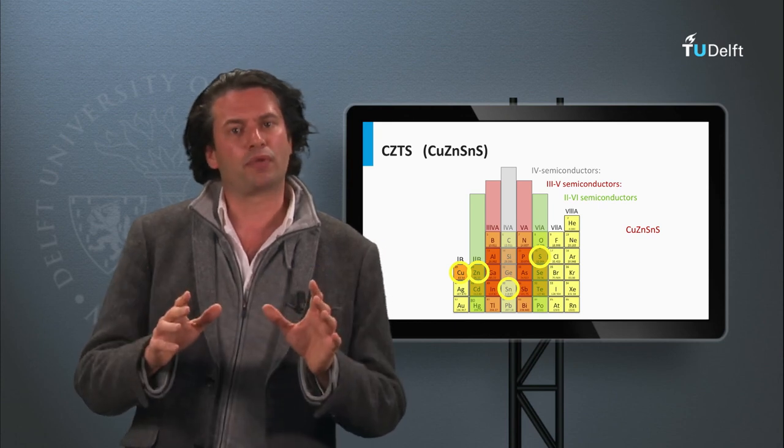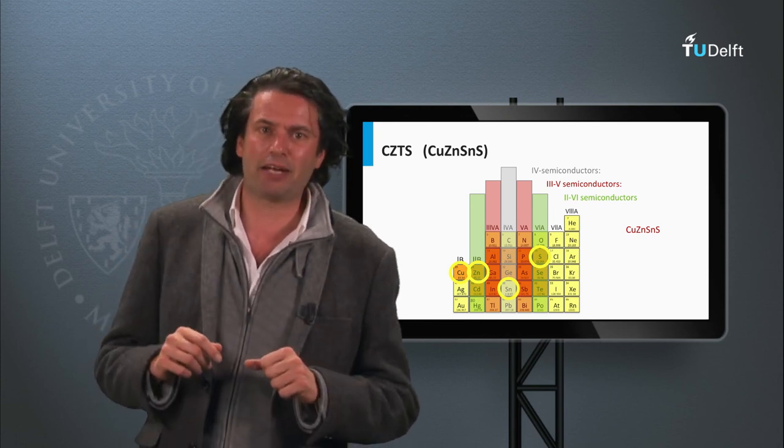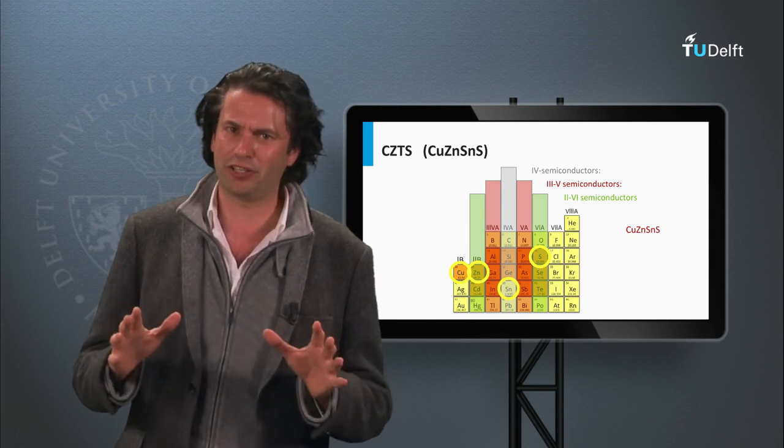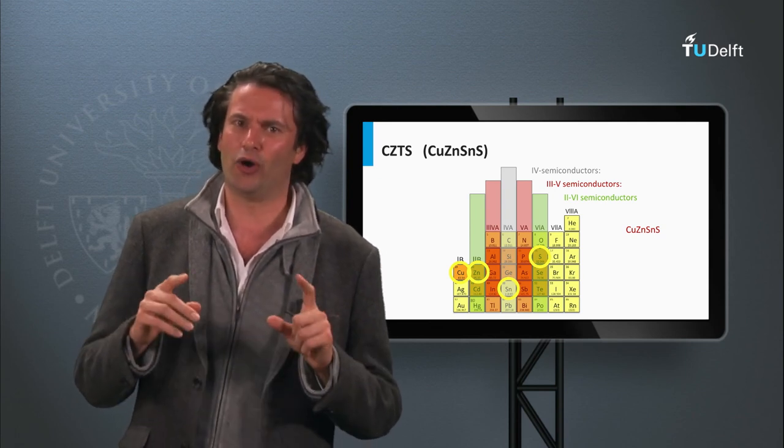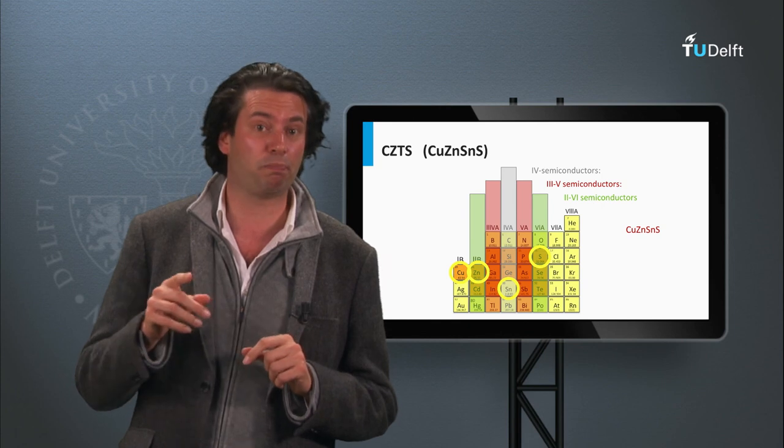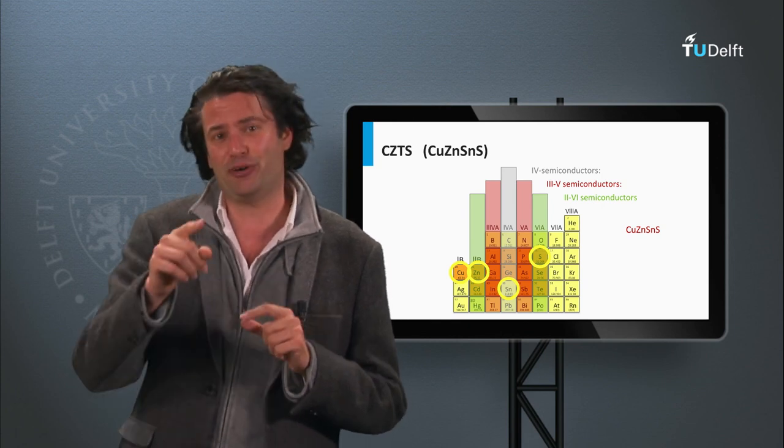In the next block, we will discuss the thin-film cadmium telluride PV technology. This is a PV technology which has currently the lowest demonstrated cost price per watt peak. See you in the next block.